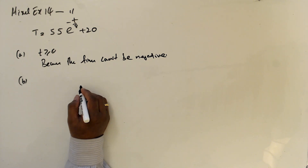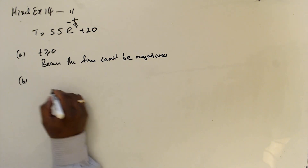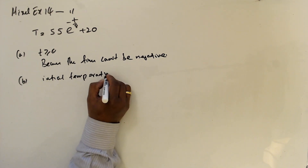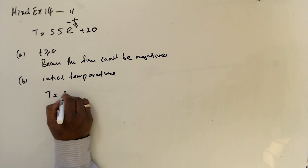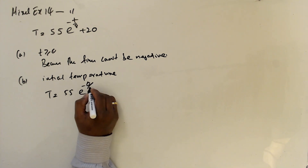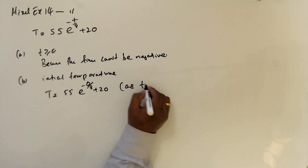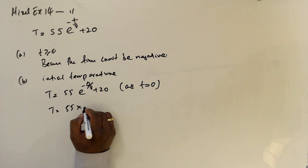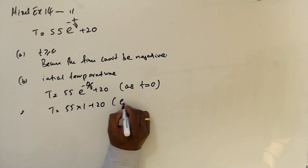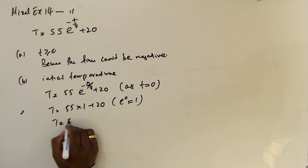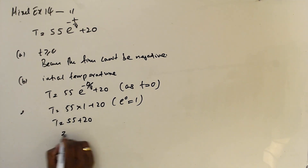Question B: state the starting or initial temperature. So when T equals 0, we get T equals 55 times e to the power of minus 0 over 8 plus 20. Since e to the power 0 equals 1, this gives T equals 55 plus 20, which equals 75 degrees.